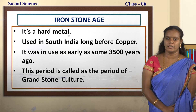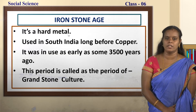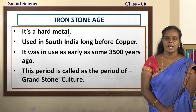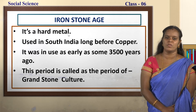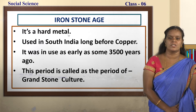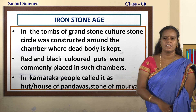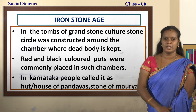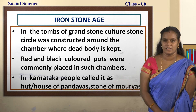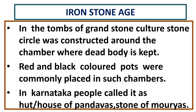Next, we will move on to Iron Stone Age. Iron is a very hard metal. It was used in South India long before copper — as early as some 3,500 years ago. This period is called the period of grand stone culture or megalithic culture. In the tombs of this grand stone culture, a circle was constructed around the chamber where the dead body is kept. A tomb is the burial of the dead. Red and black coloured pots were commonly placed in such chambers. In Karnataka, common people called these structures the hut or house of Pandavas or the stone of Mauryas.